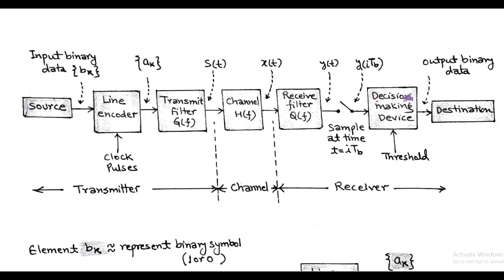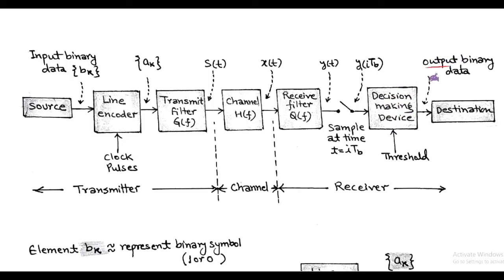This decision making device has a threshold value. The function of the decision making device is to decide whether the output is symbol 1 or symbol 0.